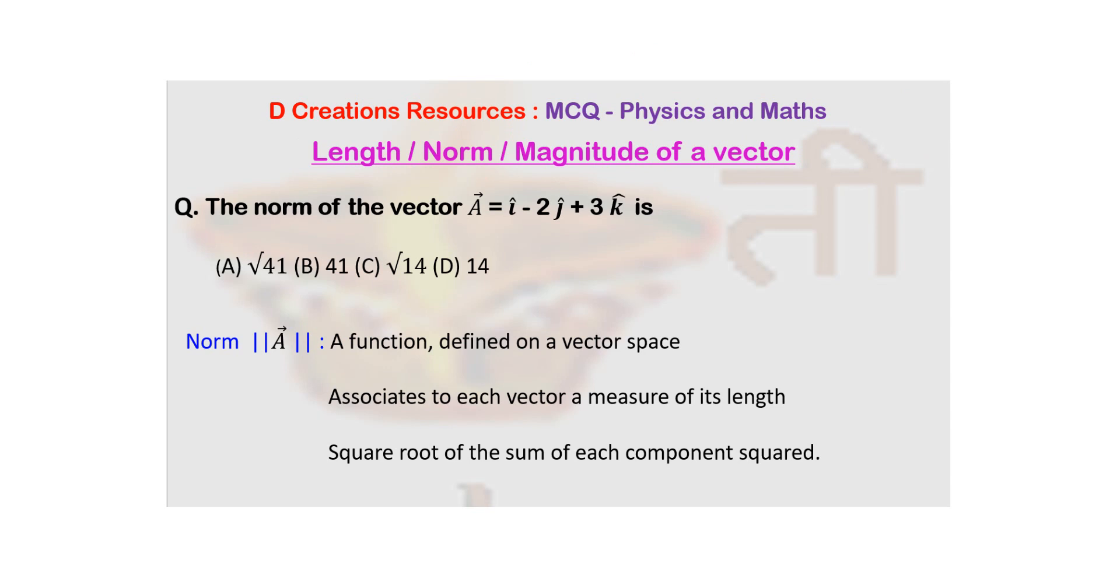So the question is you have been given a vector A which is i cap minus 2j cap plus 3k cap and you have to find its norm.